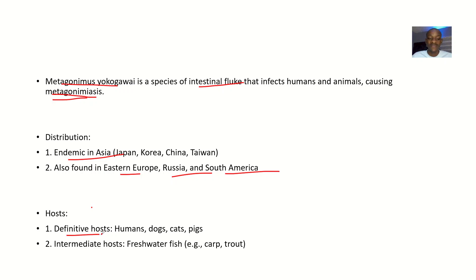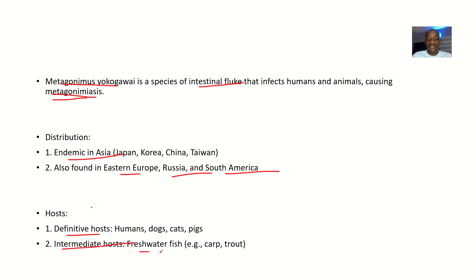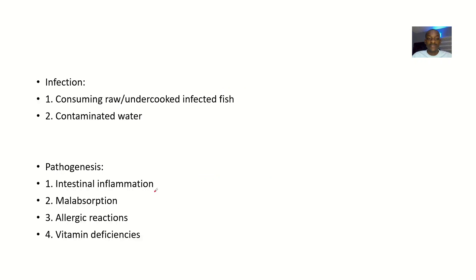The definitive hosts are humans, cats, and pigs — meaning humans can contract this infection from eating meat from any of these animals that was not properly processed. The intermediate host is freshwater fish, so humans can also contract this disease condition from eating fish, especially if the fish is undercooked.